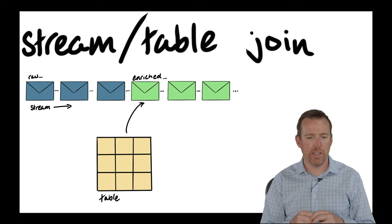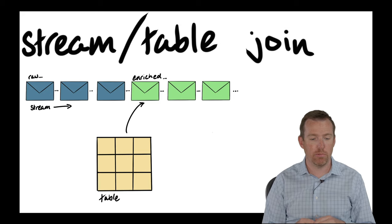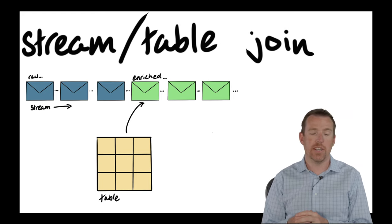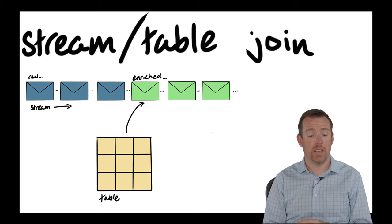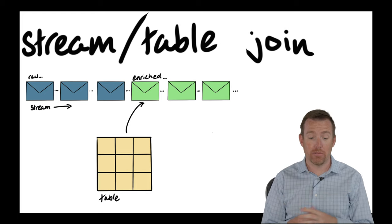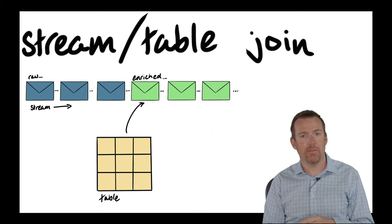So just to recap, we're going to be doing a stream table join. These are color-coded actually on this slide. So the table is yellow, the raw data, the unenriched data is blue. When you combine blue and yellow, you get green.